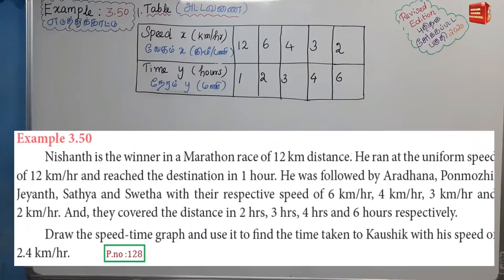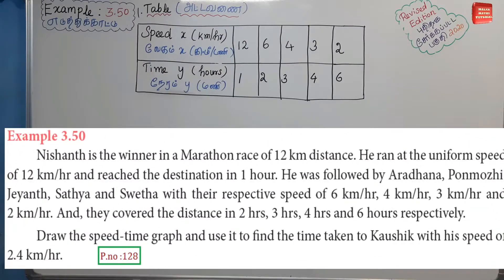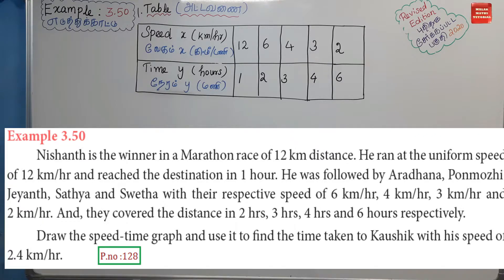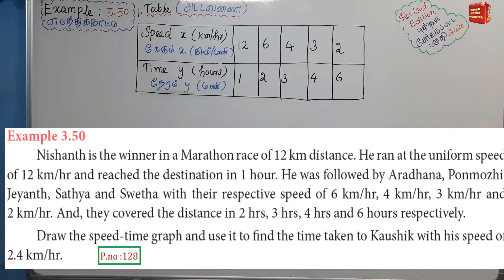Example 3.50: Nishant is the winner in a marathon race of 12 km distance. He ran at a uniform speed of 12 km per hour and reached the destination in 1 hour. He was followed by Aradhana, Panmolli, Jayant, Satya, and Svetam with respective speeds of 6, 4, 3, and 2 km per hour, covering the distance in 2, 3, 4, and 6 hours respectively. Draw the speed-time graph and use it to find the time taken by Kausik with his speed of 2.4 km per hour.